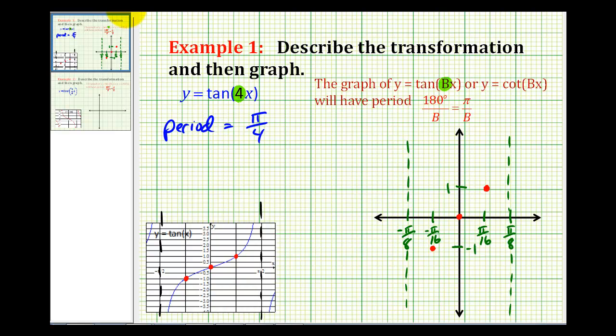And this is all we need to make a nice graph of y equals tangent four x. It's going to pass through these three points and then approach the vertical asymptotes. And there's our graph.